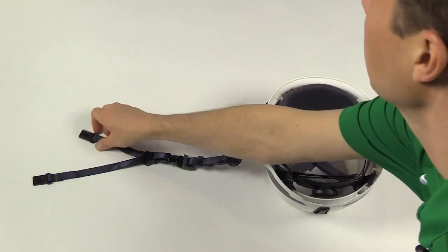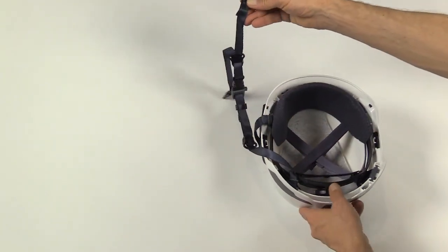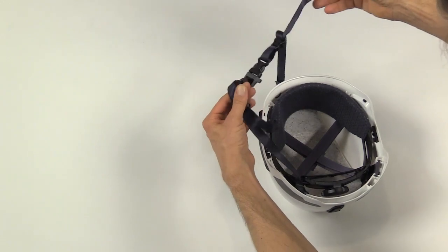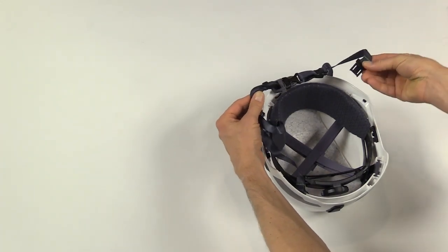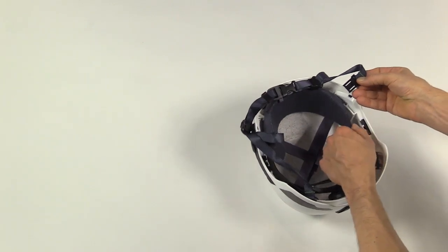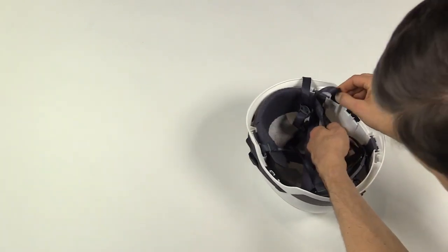Now we'll click in the right front clip. Make sure the strap isn't twisted. The front of the clip faces the interior of the helmet, and you click it in.